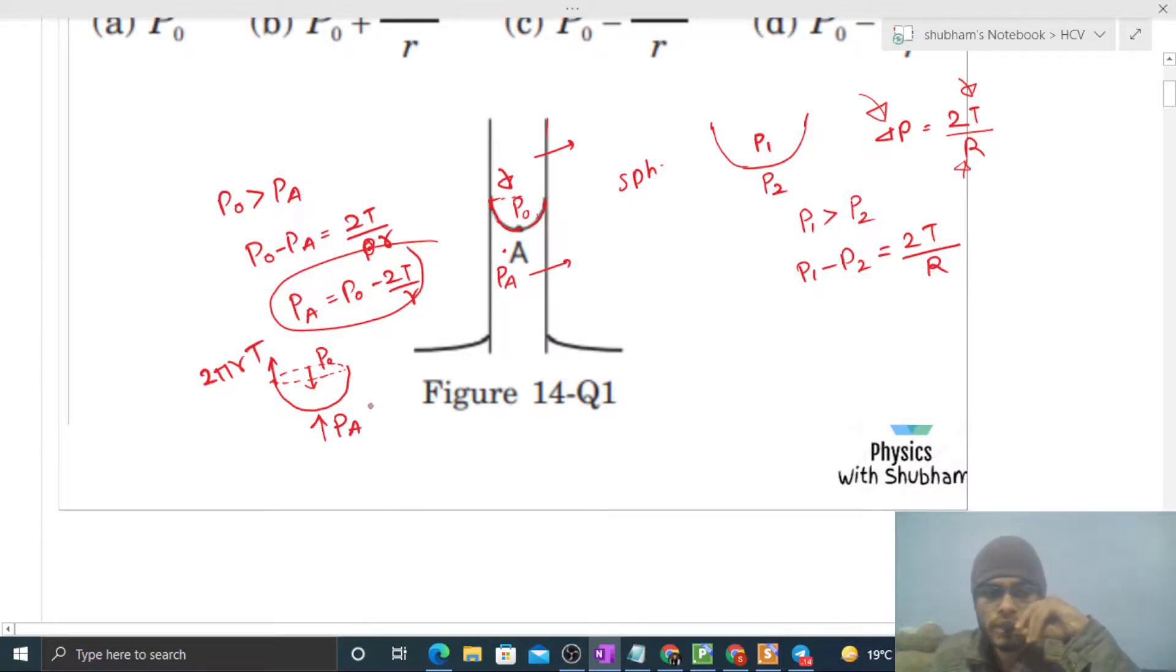So we can say pressure net force, like P0 into πr² is equal to PA into πr² plus 2πrT. Net upward force is equal to net downward force.